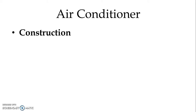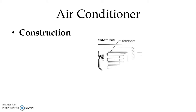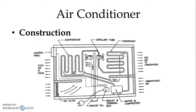Let us understand the construction of the air conditioner. We have two different types of air conditioner — one is window type and one is split type. In split type we have an indoor unit as well as an outdoor unit. In window type, we have the evaporator here and the condenser here. Most of the parts of the air conditioner remain outside of the room; we have the compressor and motor there.